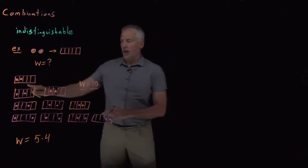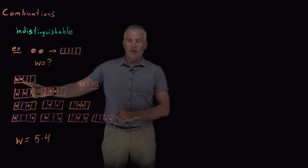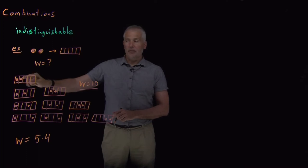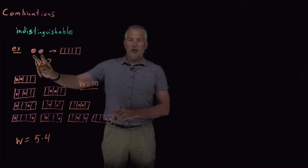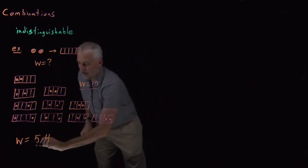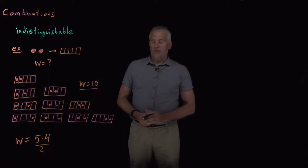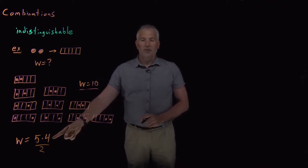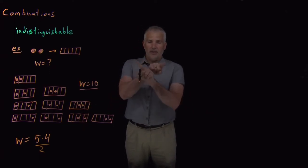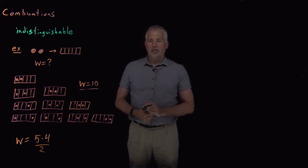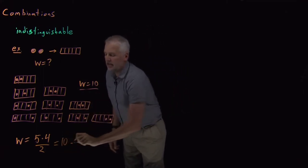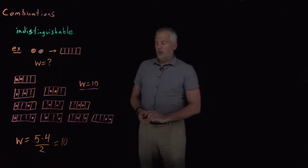It's because the objects are indistinguishable. It doesn't matter whether I first put one in box number one and then box number two, or first put it in box number two and then box number one — I get the same result either way. Because the two circles are indistinguishable, there are two different ways of arranging the circles, so I need to divide by two to fix the over-counting. Five times four divided by two gives me ten — the right answer.